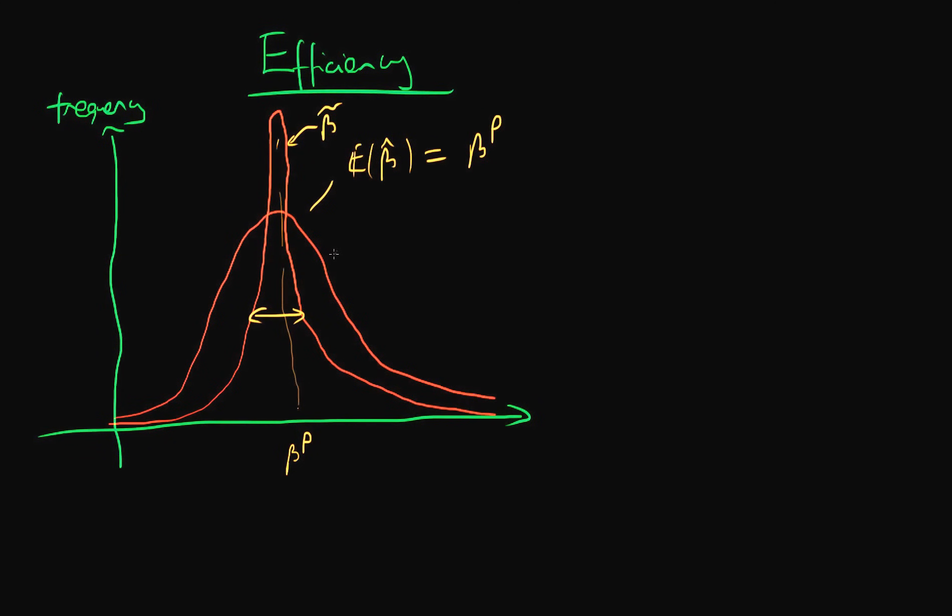So in this context, we would say that β̃ is more efficient than β̂, and not only is it more efficient, it is also unbiased. So we would definitely prefer β̃ to β̂ in this context, because if we were to apply β̃ to a given sample, there's a higher probability that we would get an estimate of the population parameter which was closer to the true population parameter.